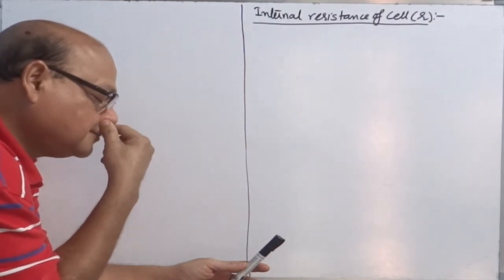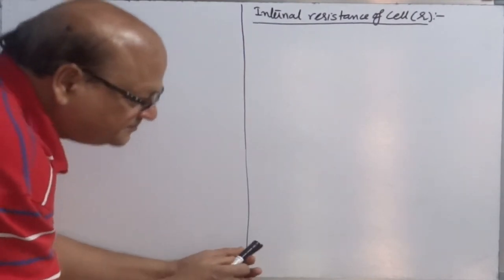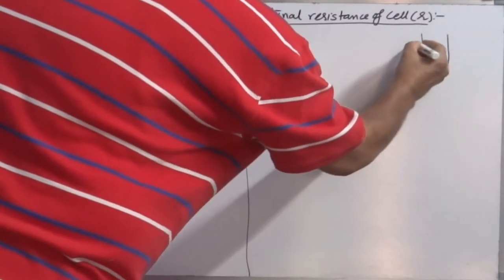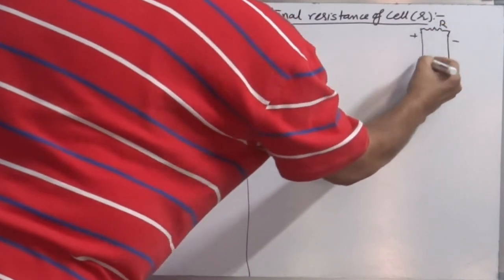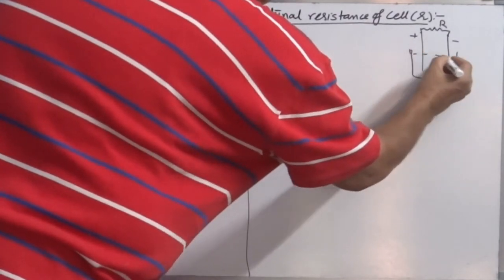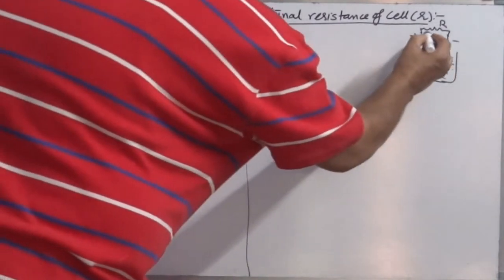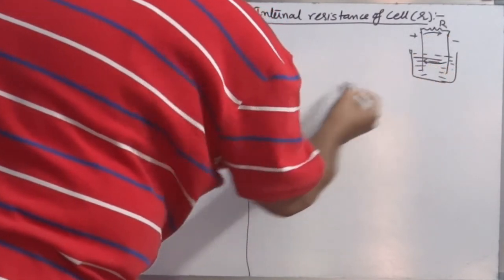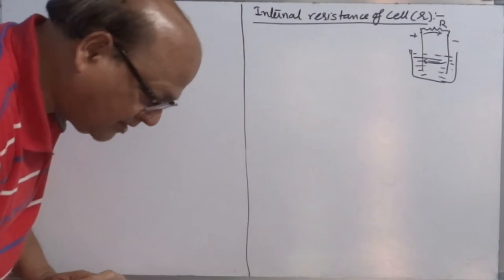A closed circuit means it forms a closed loop. So what actually happens in case of the cell: when you connect some resistance across it, these are two electrodes — positive and negative — and there is an electrolyte filled in this cell. In the external circuit, current flows from positive to negative, and inside it, the charge carrier moves from negative to positive, which actually forms a complete loop.